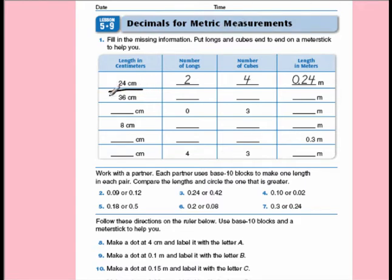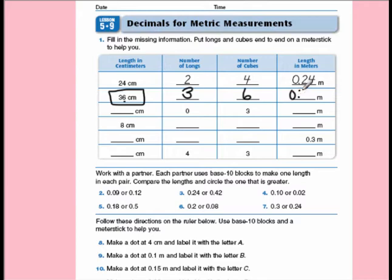I could also do this on my worksheet. I know that in 36 centimeters — that's pretty long — I have three tens and six blocks, which means I need three longs and six cubes. Each of my longs was equal to a tenth, so I would have at least something starting with three tenths. And each of my cubes was equal to one one-hundredth, so I have six hundredths. So in meters, 36 centimeters would be equal to 0.36 — thirty-six hundredths of a meter.